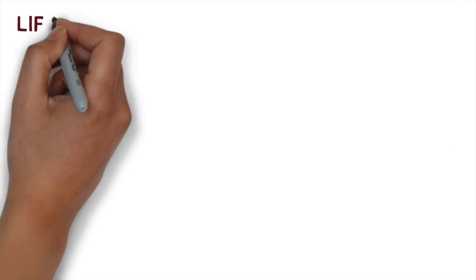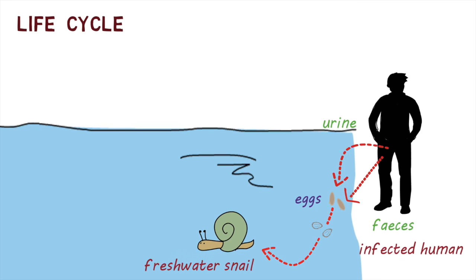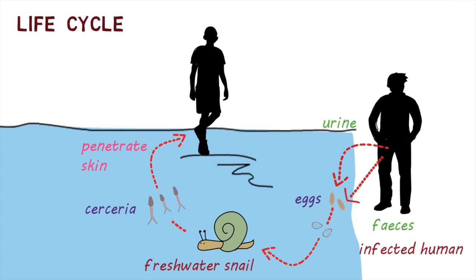Let's have a look at their life cycle. Infected humans pass schistosome eggs through their feces or urine into fresh water. These eggs then hatch into larvae and infect certain species of snails. After a period of development in the snail, they are released back into the water in a form called cercariae. The cercariae swim and penetrate the skin of a human who comes into contact with the water.